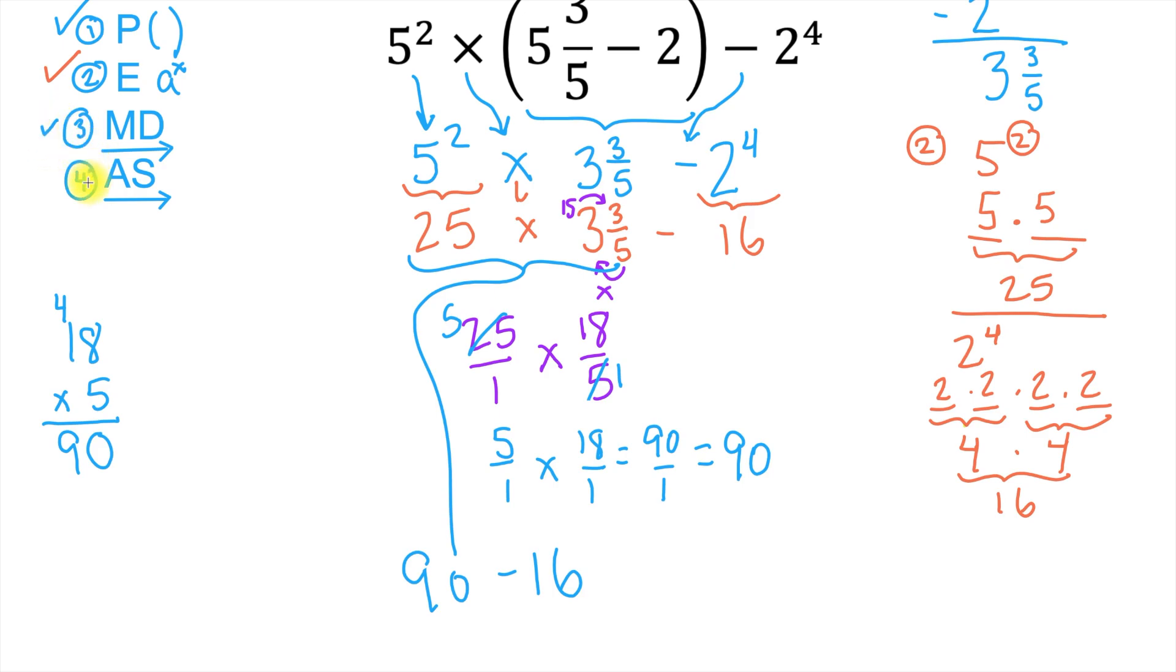So now we move on to our last step. Step 4, which is addition subtraction from left to right. And the only thing I see here is 90 minus 16. So I'll do that work on the side here. I'm going to have to borrow from the 9. The 9 is going to become 8. This will become 10. 10 minus 6 is 4. 8 minus 1 is 7. So 90 minus 16 equals 74. So after evaluating this expression, the final answer is 74.